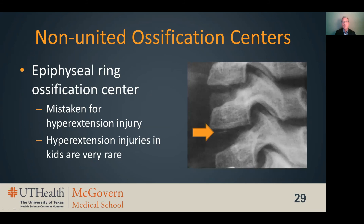The final anatomic variant I'd like to mention are epiphyseal ring ossification centers. These lie at the superior and inferior aspect of each of the subaxial vertebral bodies, and as they begin to ossify before fusing with the vertebral bodies, they look like small flecks of calcification along the anterior corners. These calcifications can be easily confused for small avulsion fragments along the anterior margin of the vertebral body related to a hyperextension injury. However, hyperextension injuries in the subaxial spine are very rare in children, so it is extremely uncommon to see a true avulsion from the anterior margin of the subaxial vertebrae.